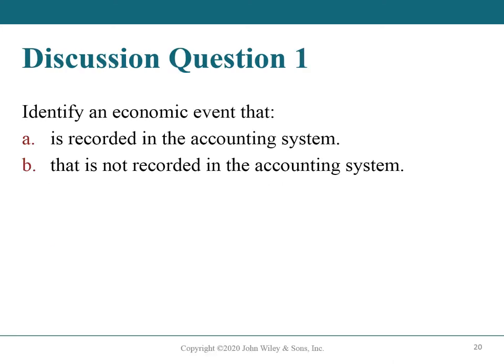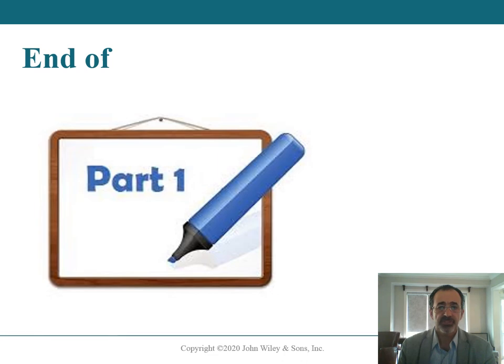Discussion question number one: identify an economic event that A) is recorded in the accounting system, and B) is not recorded in the accounting system. Think about it. A — events that are recorded would include things like a computer purchase or payment of accounts payable. B — events that are not recorded would include hiring a new employee or signing contracts with a client. This is the end of part one from chapter number one.